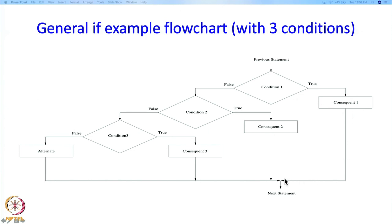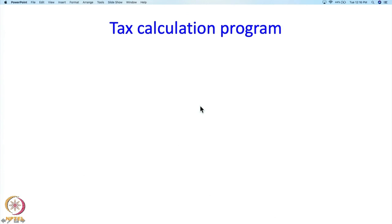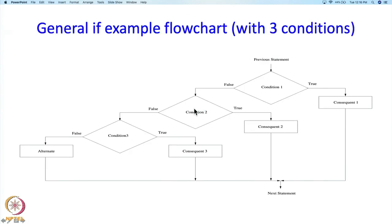If condition 1 is false, then we execute condition 2. If condition 2 is true, we take that branch and execute consequent 2, then go to the next statement. If condition 2 is false, we execute condition 3. If condition 3 is true, we execute consequent 3 and go to the next statement. If condition 3 is false, and if there is an alternate specified, it appears there; otherwise that branch directly goes to the next point. That is how an if statement with 3 conditions looks as a flowchart.